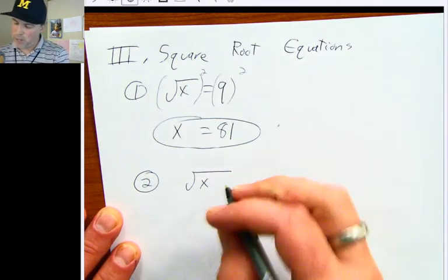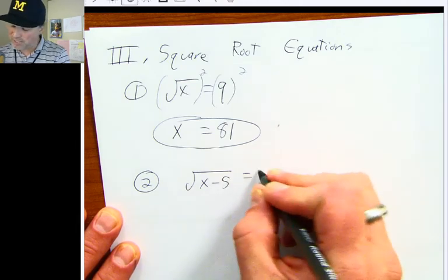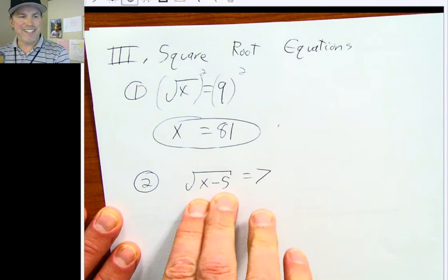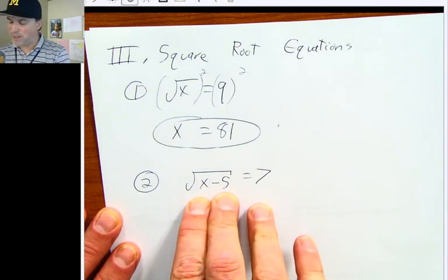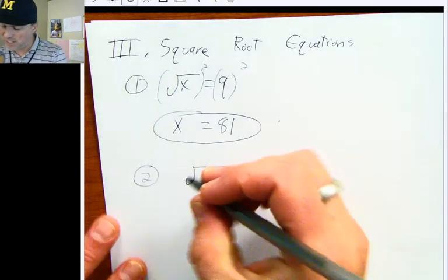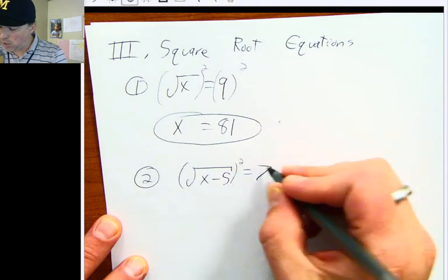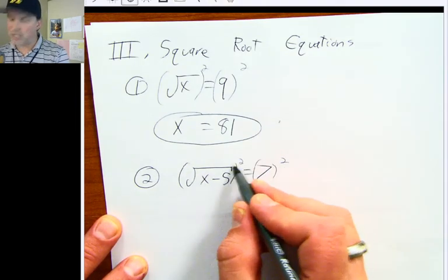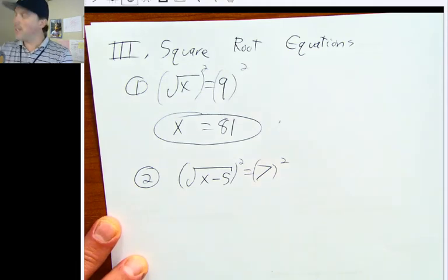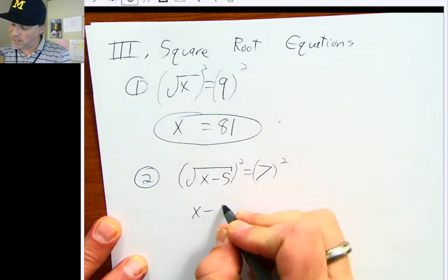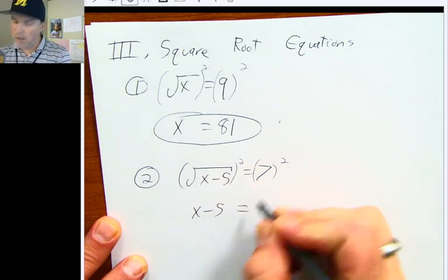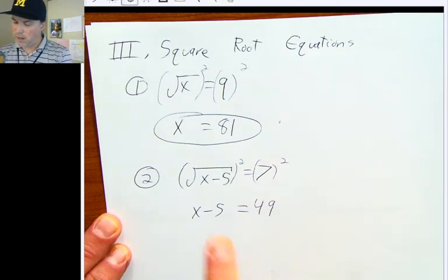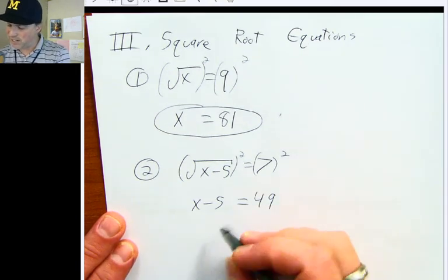Number two: the square root of x minus five equals seven. The x minus five is entirely within the square root, so we square both sides. The square root and the squared cancel out, leaving x minus five. On the other side, seven squared is 49. Add five to both sides: x equals 54.